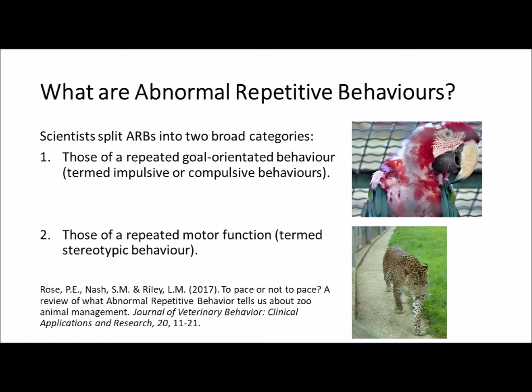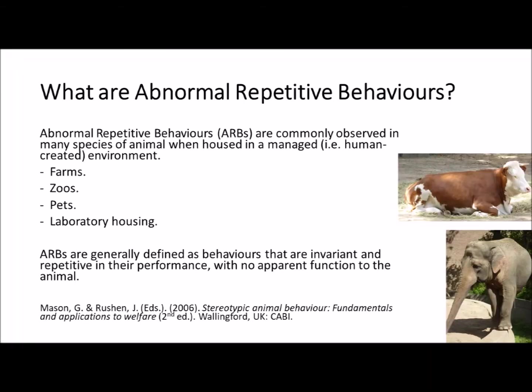Abnormal repetitive behaviours can be split into two basic categories: those of a repeated goal-oriented behaviour, such as impulsive or compulsive feather picking that we see in many species of parrot when housed in captivity, and those of a repeated motor function, which we often term as stereotypic behaviours — for example, the classic pacing of big cats that we can see in zoos.